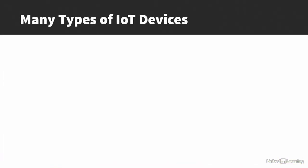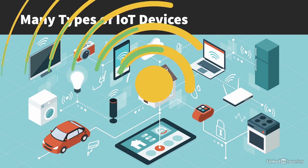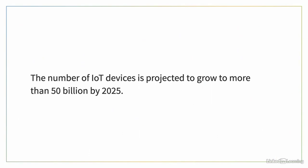Practically any electronic device can be connected to the Internet and become an IoT device. Common IoT devices include smart home lights, switches, thermostats, home appliances, TVs, security cameras, and even locks. Many health devices are also directly connected to the Internet, such as fitness trackers, connected scales, pedometers, and sleep monitors. Personal assistants that respond to voice commands are also popular. And most modern vehicles are also IoT devices. The number of IoT devices is projected to grow to more than 50 billion by 2025.